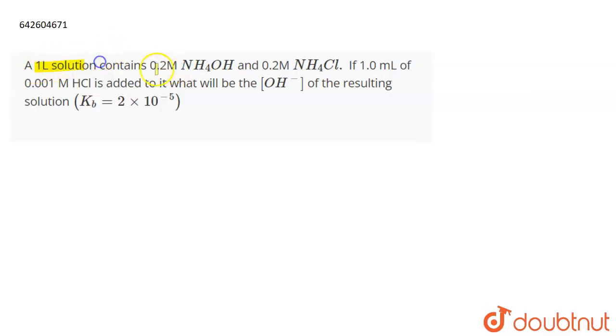The question is, a 1 liter solution contains 0.2 molar NH4OH and 0.2 molar NH4Cl. If 1 ml of 0.001 M HCl is added to it, what will be the concentration of OH- of the resulting solution?